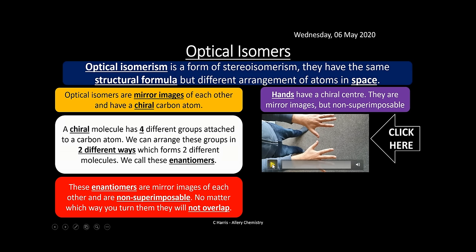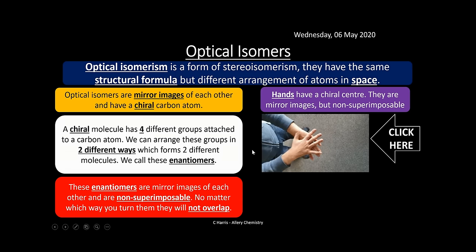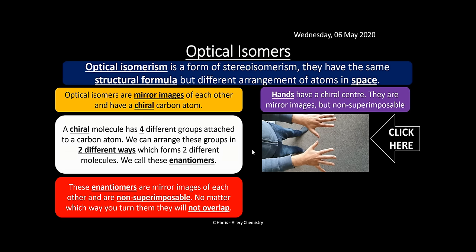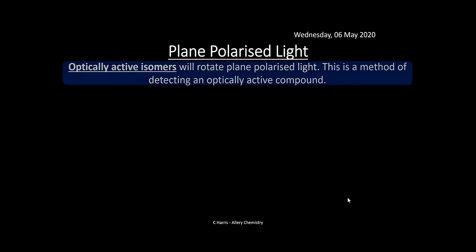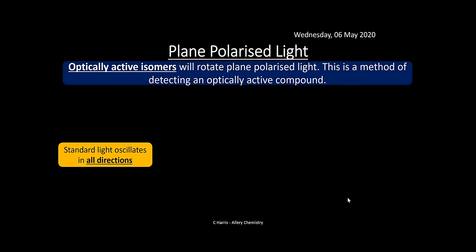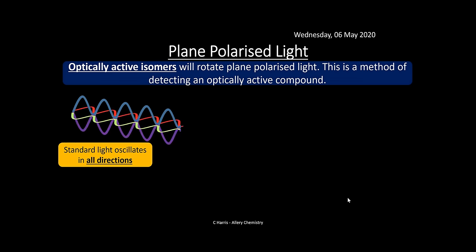As you can see from the animation, the hands are non-superimposable — you can spin them around as many times as you want and they will not overlap. These two molecules are also enantiomers: the different colors represent different groups attached to a central carbon atom. They are mirror images with the mirror line shown between them — those are your two enantiomers.